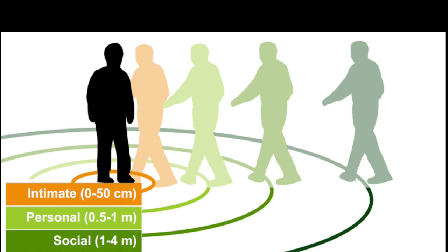Hall has identified four distinct zones of personal space that people maintain in their interactions with others. We have the intimate zone, the personal zone, the social zone, and the public zone.